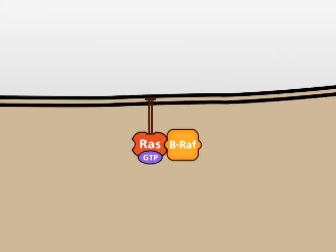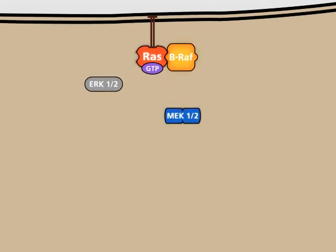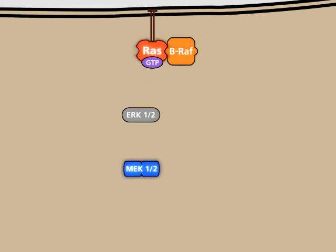Active BRAF phosphorylates and activates the kinases MEK1 and 2, which in turn phosphorylate and activate the kinases ERK1 and 2.